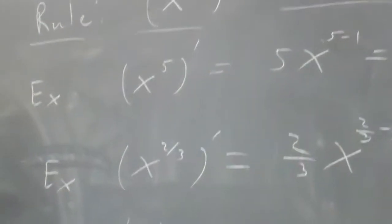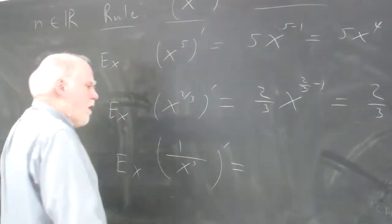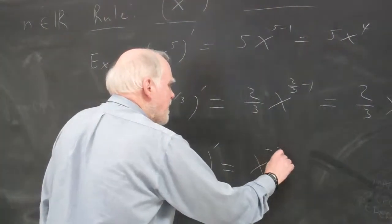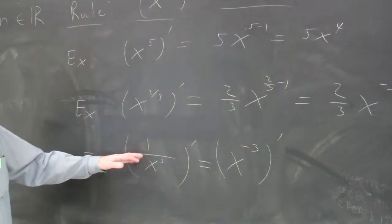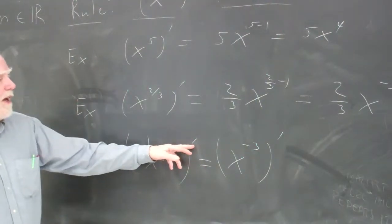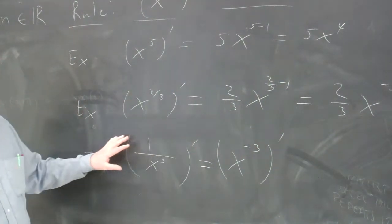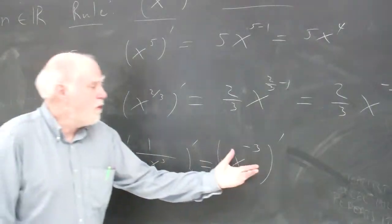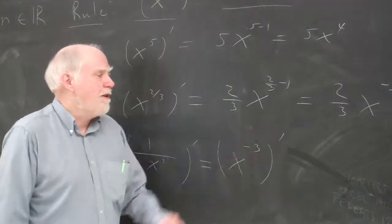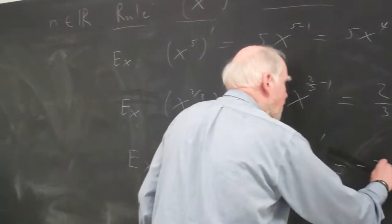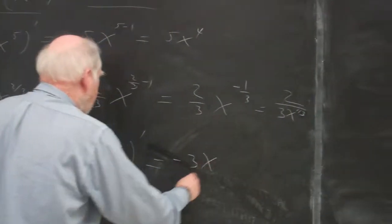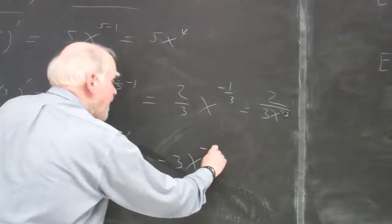Then we have things like 1 over x cubed. I bring it upstairs, and it becomes negative x cubed. Remember, always be careful about what you're doing. If you're going to take the derivative, indicate it with prime notation or Leibniz notation. You don't get rid of that until you actually go negative 3x to the negative 3 minus 1, which is negative 4.